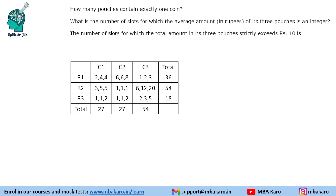The second question: how many pouches contain exactly one coin? We count the number of pouches with exactly one coin. Counting them: one, two, three, four, five, six, seven, eight — so there are a total of eight such pouches.